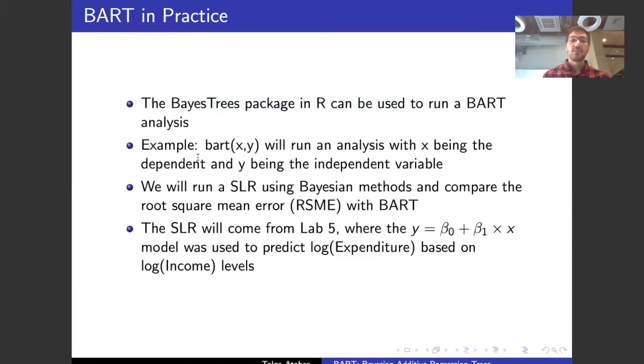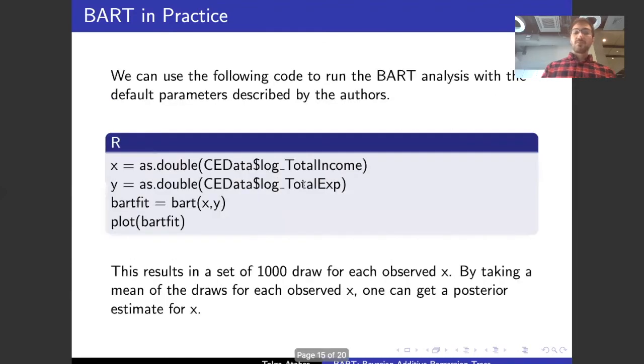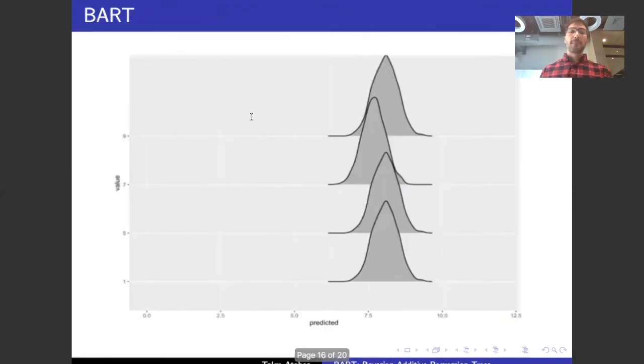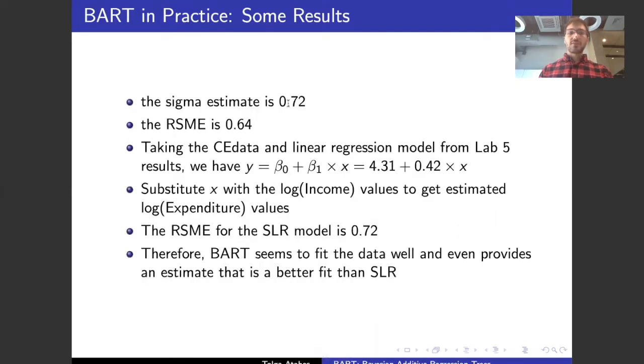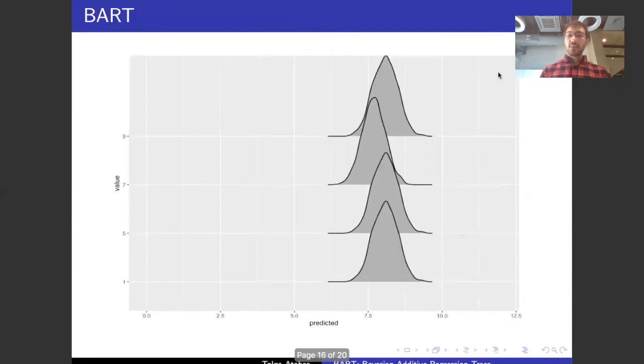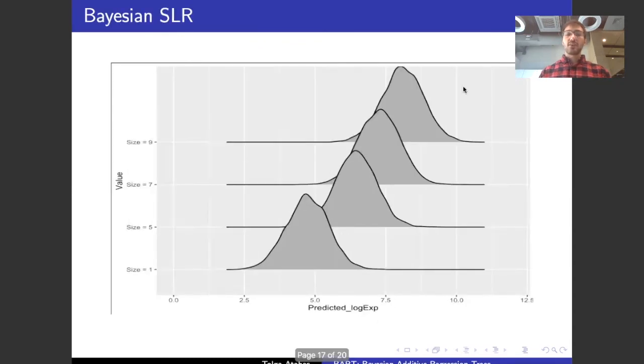In order to use BART, we usually use the BayesTrees package in R that's already there. We can use it by bart(x,y) with x being the independent and y being the dependent variable. I'm going to compare this with a simple linear regression that we used in lab five, where we predicted expenditures based on income levels. We can go through this and the BART is set to draw 1000 draws of each observed x. And then by taking the mean of these estimates, we get the posterior for the x. Just going through the results real quick, the root square mean error for the BART method was 0.64, and for the simple linear regression, 0.72. So they're close, but the BART seems to be performing better. And the BART also has much narrower posterior predictions, whereas the linear regression from lab five was much wider.